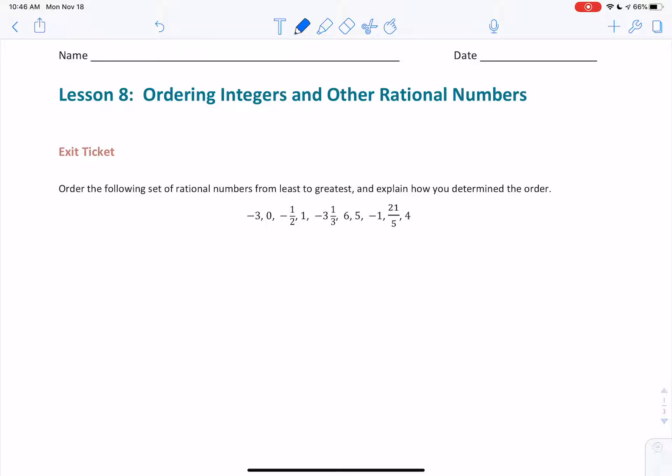So the first number given is negative 3. That's a negative number. Then I have negative 1 half. What other numbers do I have? Negative 3 and 1 third. Then I have a negative 1. That's it for negative numbers. And I'm going to have 0. 0 is the big boundary between positives and negatives. Then 1, 6, 5, 21 over 5, and 4. I think I got them all.